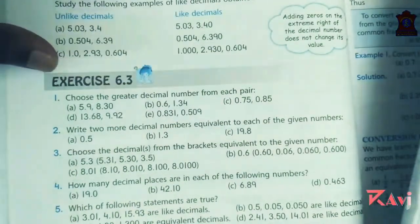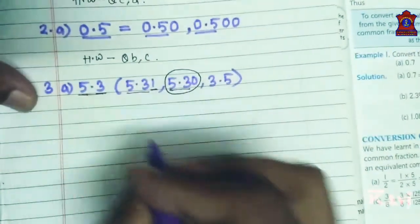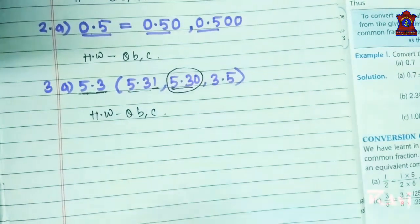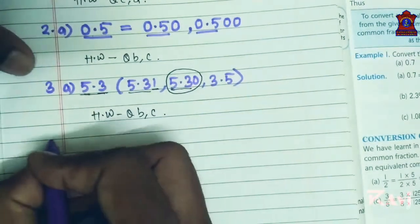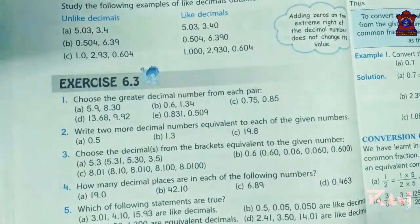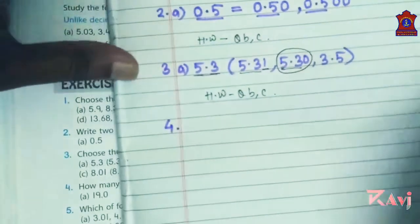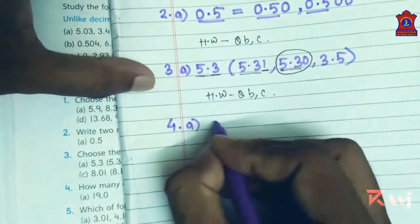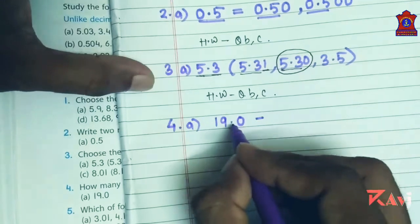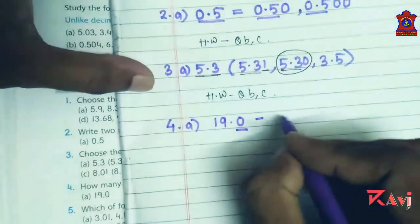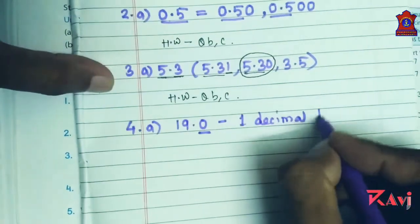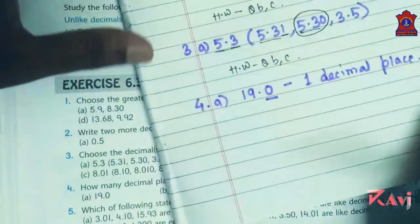Now move to question number 4: how many decimal places are in each of the following numbers? Simple — 19.0: after the decimal there is only one digit, so one decimal place.